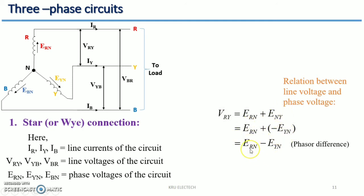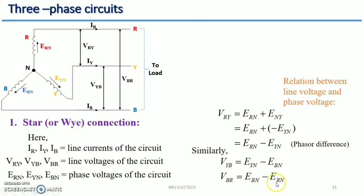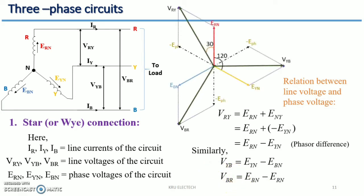We already know this from the previous video. For VBR it is EBN minus ERN, or you can write EB minus ER, that is EBR or VBR. In the phasor diagram, ERN, EYN, and EBN are all 120 degrees apart from each other. You can also write ER, EY, and EB, or VR, VY, and VB.